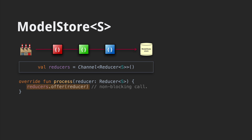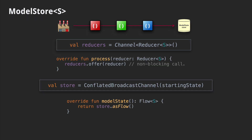Before we can start actually processing this new stream, let's look at how we'll be broadcasting our model state to consumers. We use something called a conflated broadcast channel. It's a channel, so much like our reducers channel, you can send values into it and receive values from the other end. It's also a broadcast channel, so unlike a vanilla channel, it supports multiple receivers. We need this so multiple consumers can simultaneously subscribe to our model store. As a bonus, we get the as-flow extension function for free, so consumers will see a flow of state and won't need to worry about the more complex channel API.